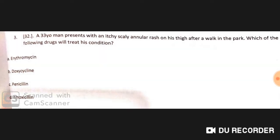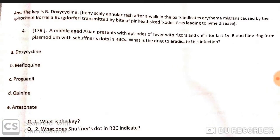A 33-year-old man presents with an itchy scaly annular rash on his thigh after a walk in a park. The drug to treat this condition is doxycycline. This is a case of Lyme disease. The itchy scaly annular rash (erythema migrans) is caused by the spirochete Borrelia burgdorferi, transmitted by the bite of a pinhead-sized Ixodes tick.